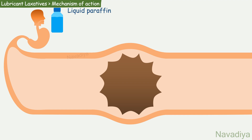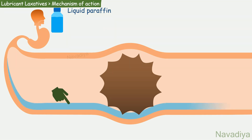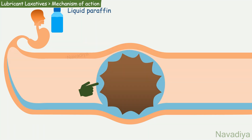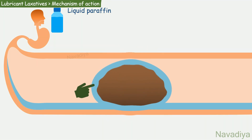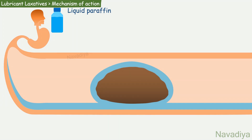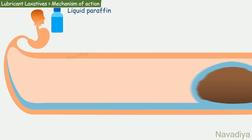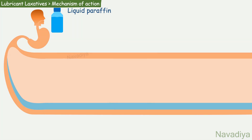Let's see its mechanism of action. It lubricates the intestinal wall as well as faecal material. It also retards water absorption from faecal material, making it softer. This makes the passage of stool smoother, and its effects appear after 1–3 days.